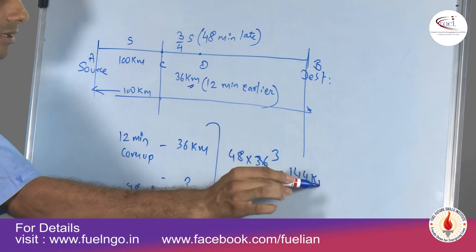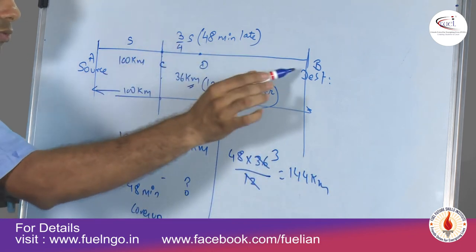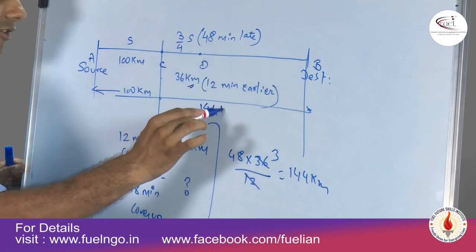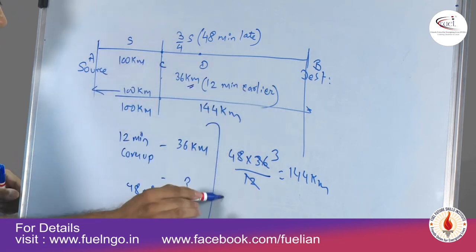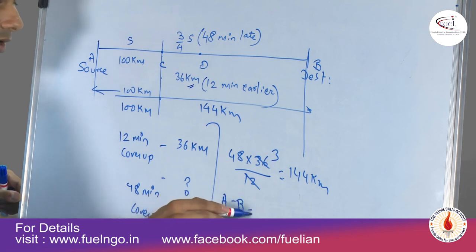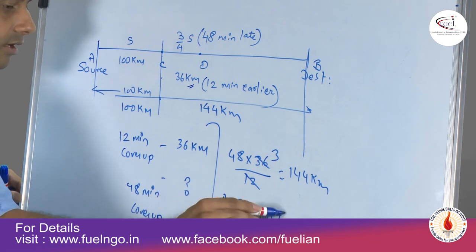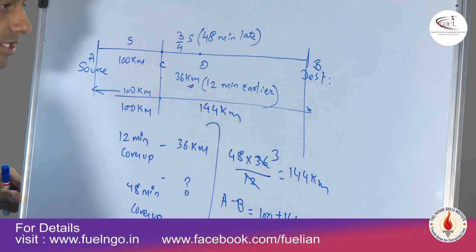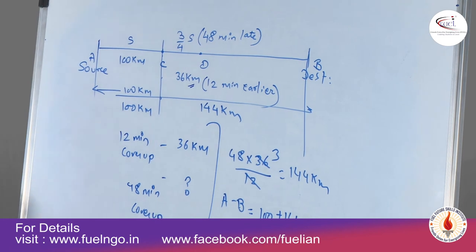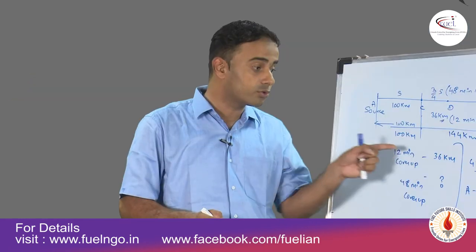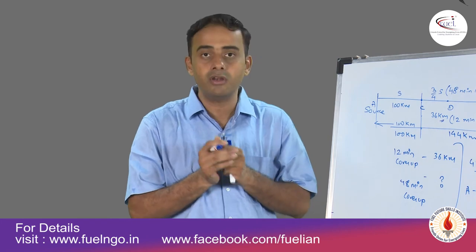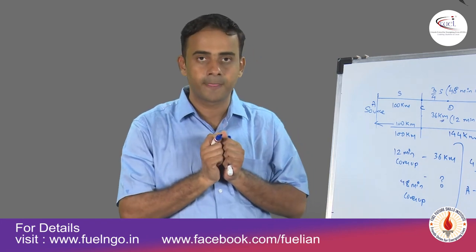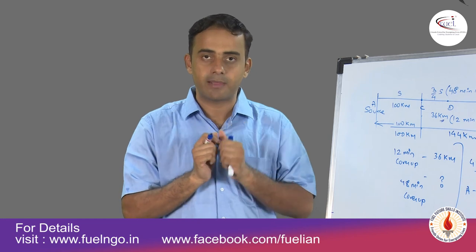The distance from C to B is 144 km, and from A to C it is 100 km. So the total distance from A to B equals 100 + 144 = 244 km. The total distance traveled by the train from source to destination is 244 kilometers.